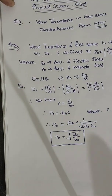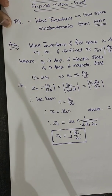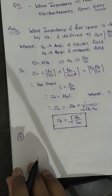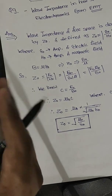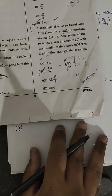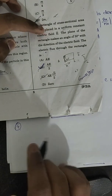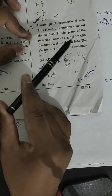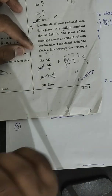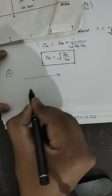Now I am going to discuss question number 4, which we have discussed in the last video. Question number 4 says: a rectangle of cross-sectional area A is placed in a uniform constant electric field E. The plane of the rectangle makes an angle of 30 degrees with the direction of the electric field. Find the electric flux through the rectangle.